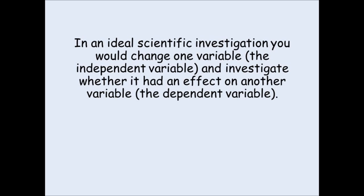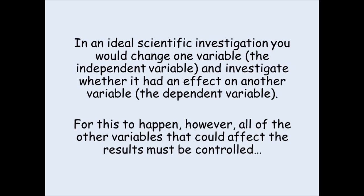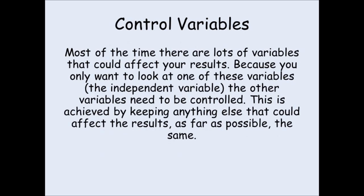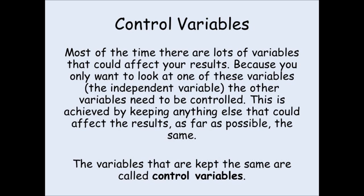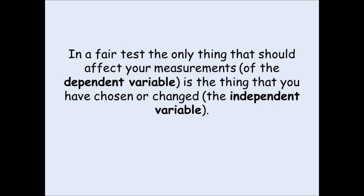You can only say this for sure if you control anything else that could have altered your results. These variables, if left uncontrolled, could affect your measurements, so you cannot make a definite conclusion. These variables are called control variables, and the way they are controlled is that they are kept the same. In a fair test, the only thing that should affect your measurements of the dependent variable is the thing that you have chosen or changed, which is the independent variable.